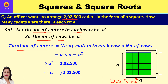Total number of cadets is 22,500. So number of cadets in each row × number of rows = a × a = a² = 22,500. To find 'a', that is the number of cadets in each row, we need a = √22,500. So we have to find the square root of 22,500.